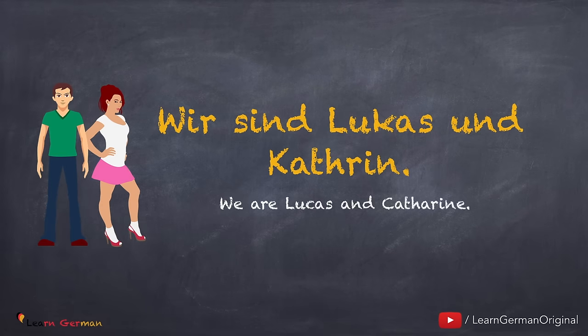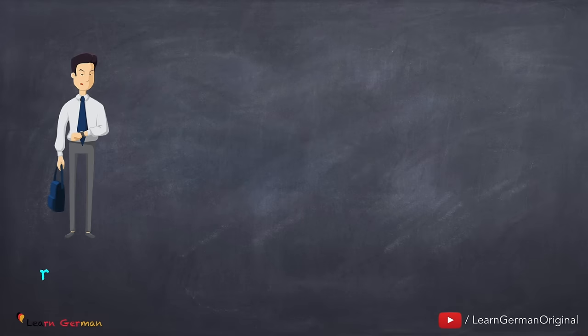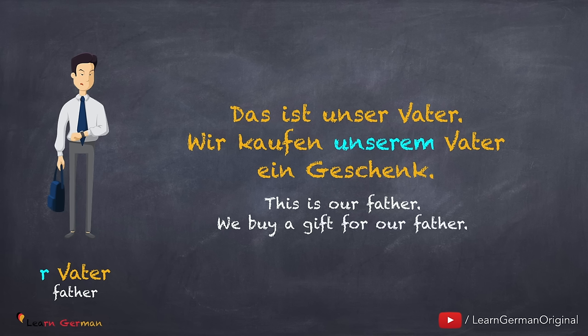Wir sind Lukas und Kathrin. Do you remember what possessive pronoun is used with 'wir'? Let's look at the first sentence. Das ist unser Vater. Wir kaufen unserem Vater ein Geschenk. Since the article for 'Vater' is 'der', you would use 'unserem' in dative. And yes, the possessive pronoun for 'wir' is 'unser'.